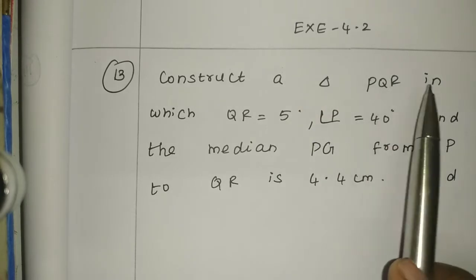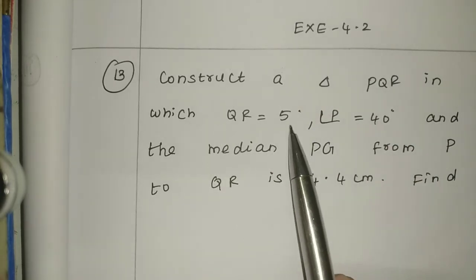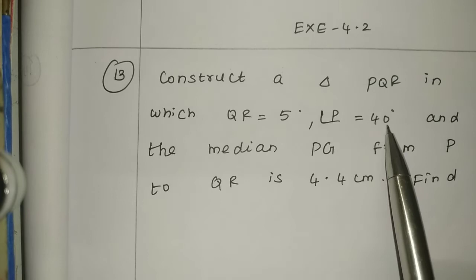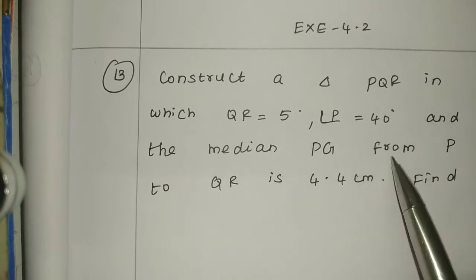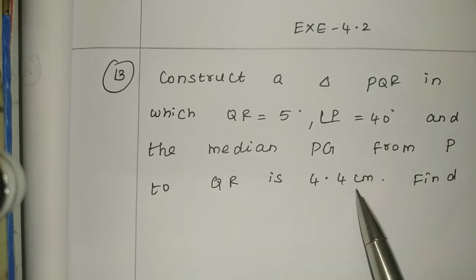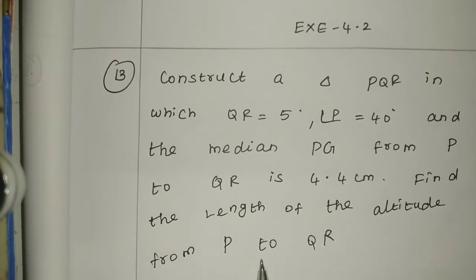Construct a triangle PQR in which QR equals 5 cm, angle P equals 40 degrees, and the median PG from P to QR is 4.4 cm. Find the length of the altitude from P to QR.